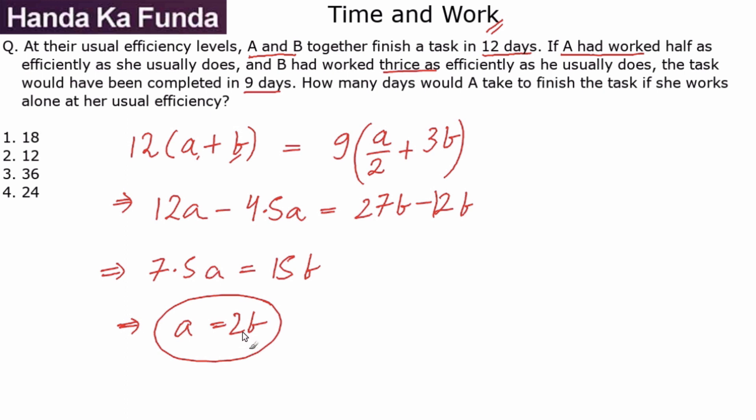Now let's look at the rest of the questions. How many days would A take to finish the task if she works alone at her usual efficiency? So what is the total work to be done? That is 12a plus 12b.